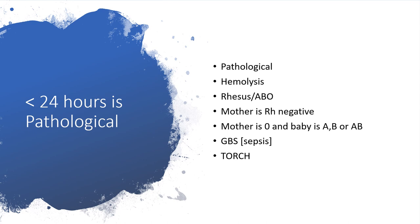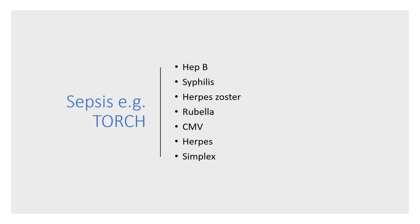In that case, we might be dealing with hemolysis, particularly if it is Rhesus or ABO incompatibility — whether the mother is Rhesus negative, or whether the mother is blood group O and the baby is A, B, or AB. We also need to determine whether we are dealing with sepsis. After ruling out blood group issues, we check for TORCH infections: Hepatitis B, syphilis, herpes, rubella, cytomegalovirus, and herpes simplex.